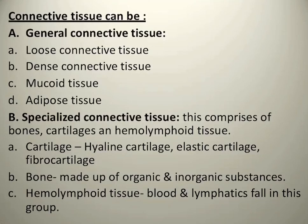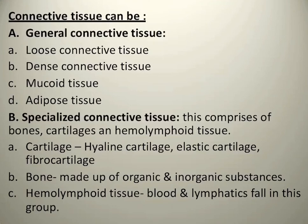Connective tissue can be general or specialized. General connective tissue has general functions — this includes loose connective tissue, dense connective tissue, mucoid tissue, and adipose tissue. Specialized connective tissue has specialized functions — this includes cartilage (hyaline cartilage, elastic cartilage, fibrocartilage), bone (composed of organic and inorganic substances), and hemolymphoid tissue, which includes blood and the lymphatic system.